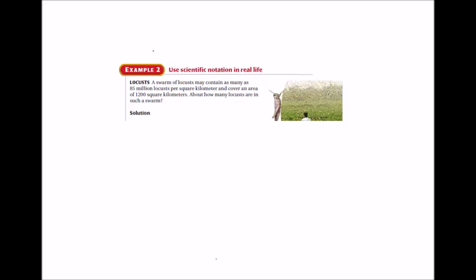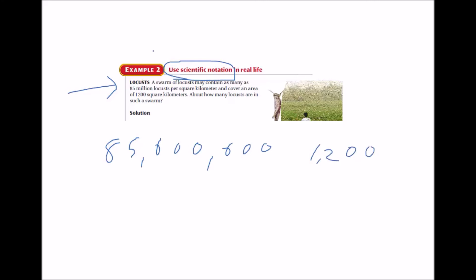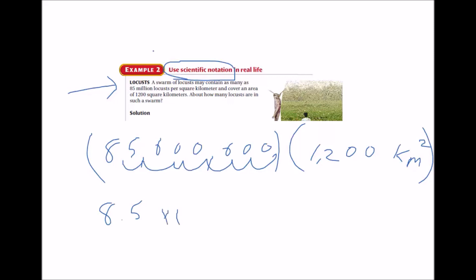The last topic is scientific notation, using a locust problem. A swarm of locusts may contain as many as 85 million per square kilometer and cover an area of 1,200 square kilometers. We want to find the total number of locusts, so we multiply those two numbers. 85 million is 8.5 times 10 to the 7th power, and 1,200 is 1.2 times 10 to the 3rd power.